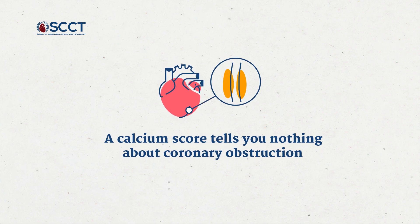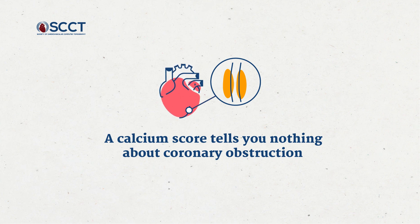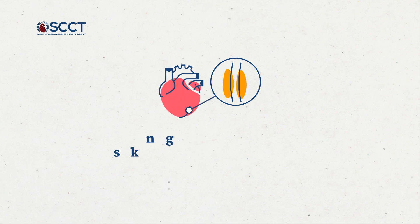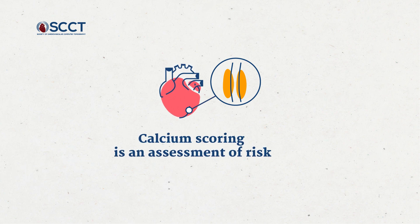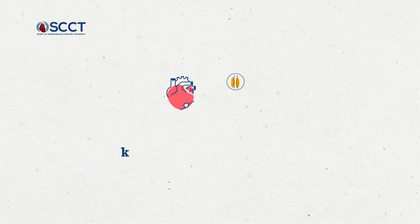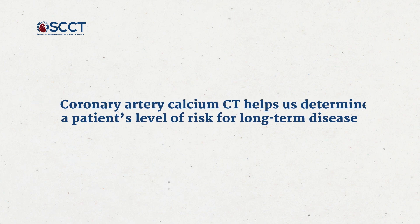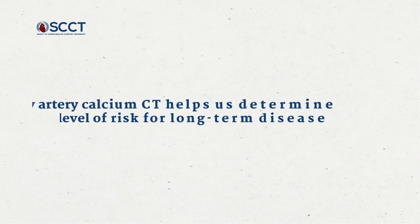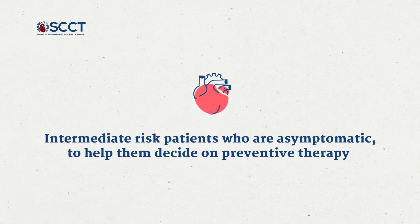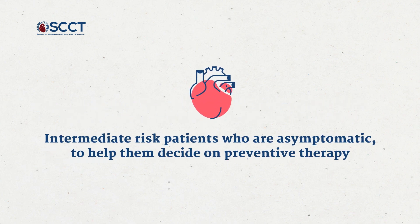Calcium score tells you nothing about coronary obstruction and we can't use it in symptomatic patients, in place of a catheterization the way we can with the CT angiogram, which tends to perform better than a stress test when used appropriately. Calcium scoring is really just an assessment of risk. Coronary artery calcium CT helps us determine a patient's level of risk for a long-term disease and the necessity for medical management. The best use case is for intermediate risk patients that are asymptomatic, to help them decide on preventive therapy.